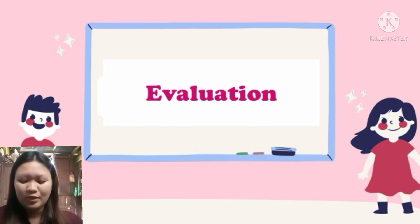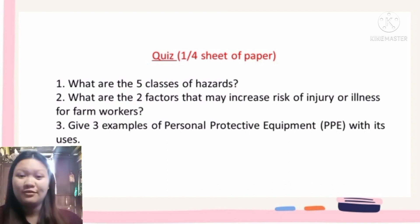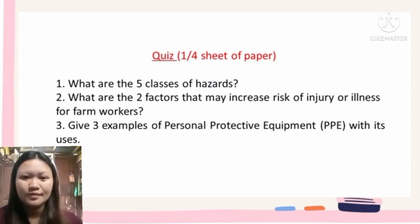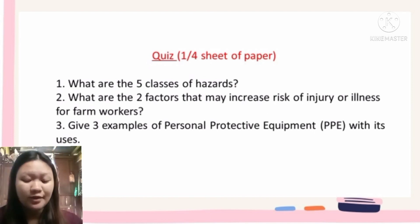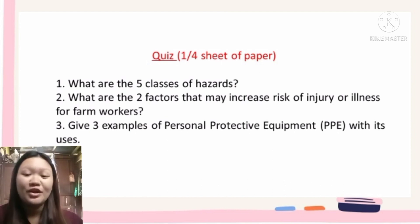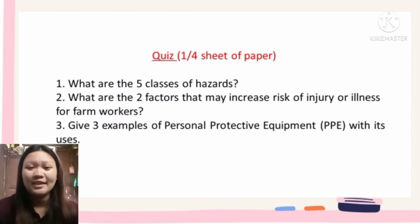Now let's move on to the evaluation. We will be having a short quiz — get one-fourth sheet of paper and listen carefully. Number one: what are the five classes of hazards? Number two: what are the two factors that may increase risk of injury or illness for farm workers? Number three: give three examples of personal protective equipment (PPE) with their uses. Now kindly pass your paper.